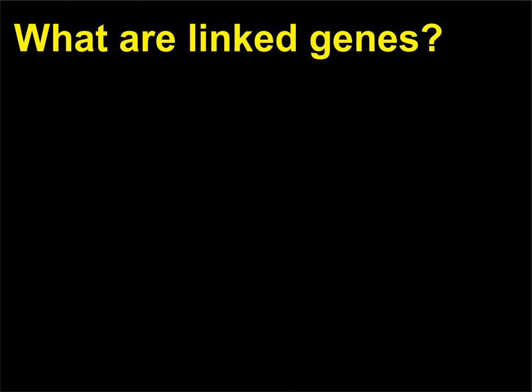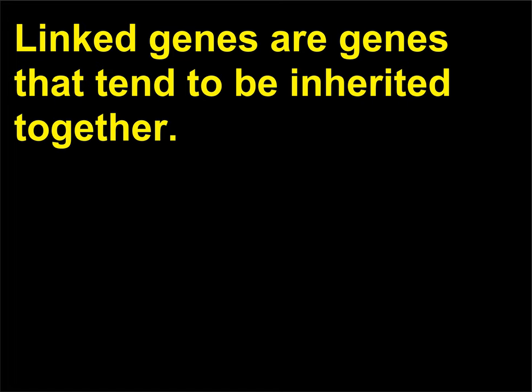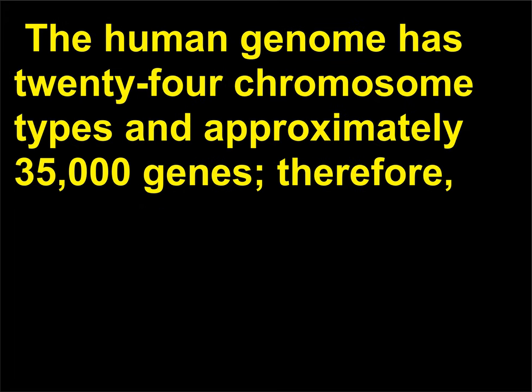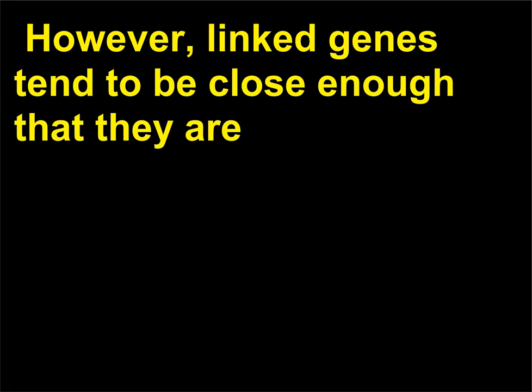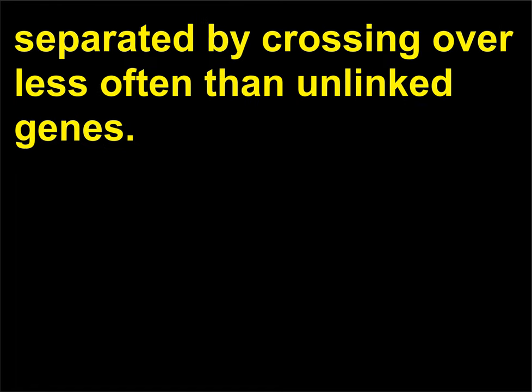What are linked genes? Linked genes are genes that tend to be inherited together. The human genome has 24 chromosome types and approximately 35,000 genes; therefore, at least 1,000 genes would, on average, be found on a single chromosome and travel through meiosis as a discrete unit. However, linked genes tend to be close enough that they are separated by crossing over less often than unlinked genes.